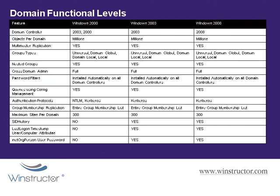The domain functional levels mirror the Forest Functional Levels — you can also set them to Windows 2000, 2003, or 2008. It's important to understand that you can't lower the domain functional level below what the Forest Functional Level is set to, although a domain can be set higher than the forest. For example, if the Forest Functional Level is set to Windows 2003, you can't set the Domain Functional Level to Windows 2000. Also, while you might only have one forest, you'll probably have multiple domains, each settable at different functional levels — but equal to or higher than the forest level.